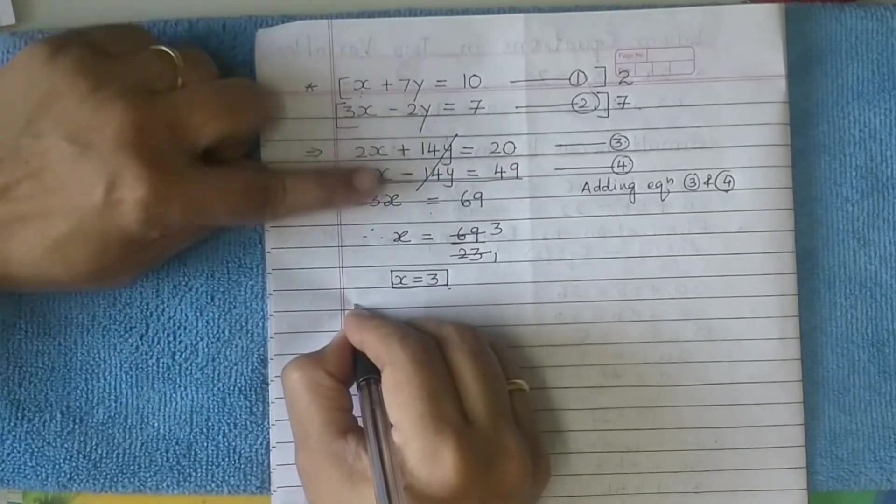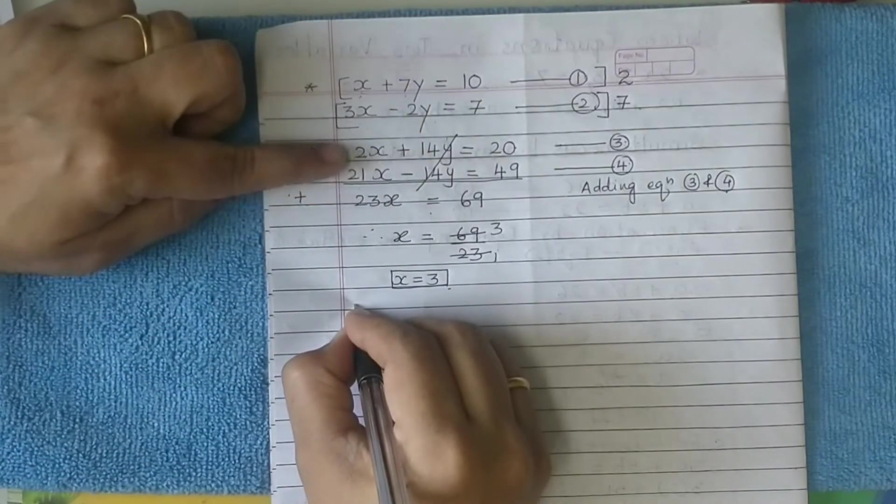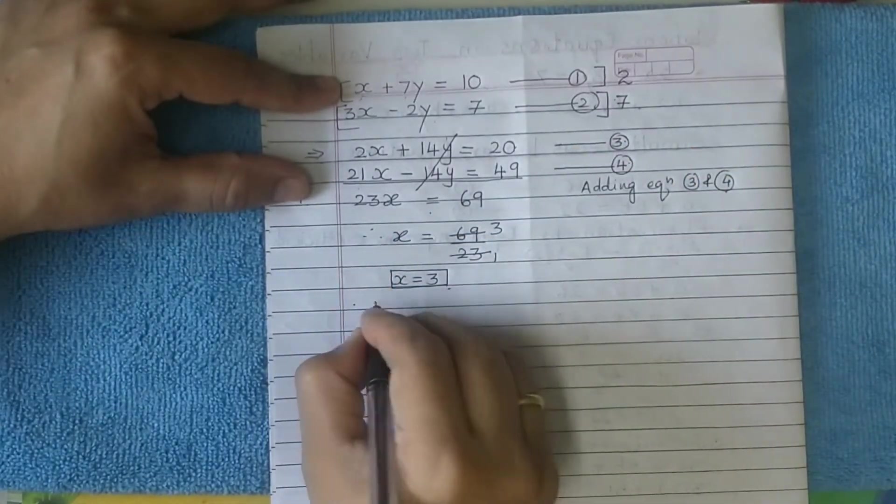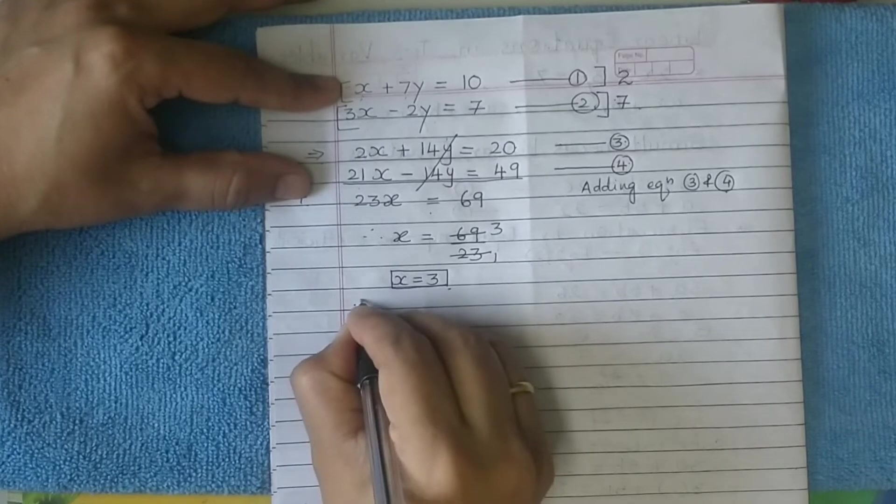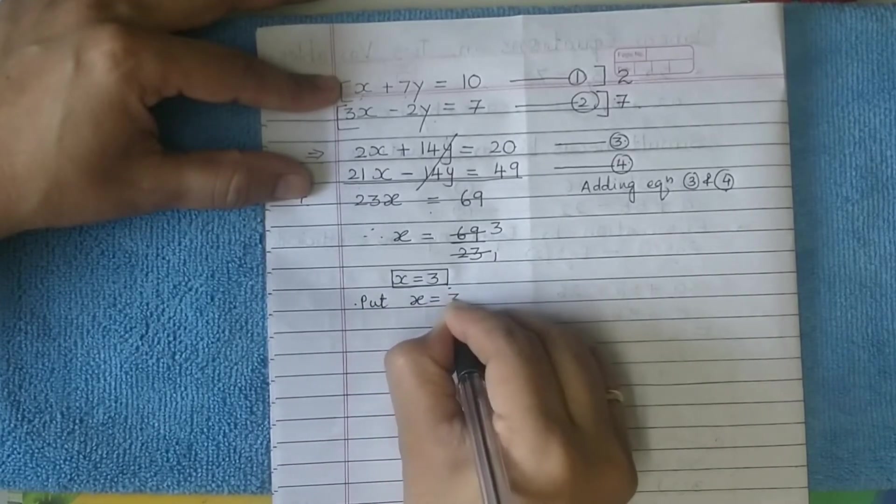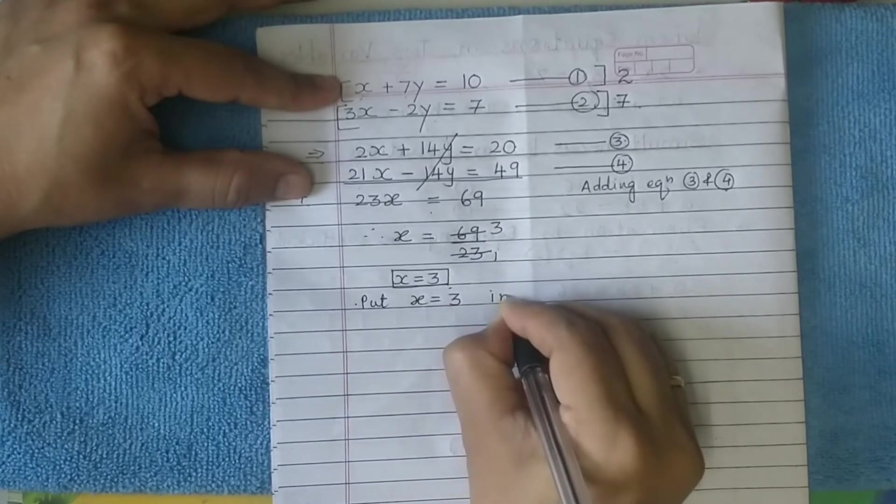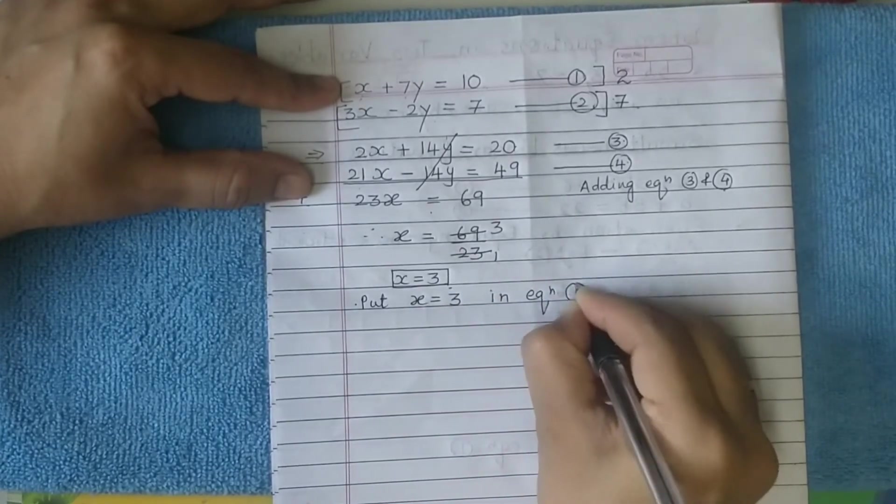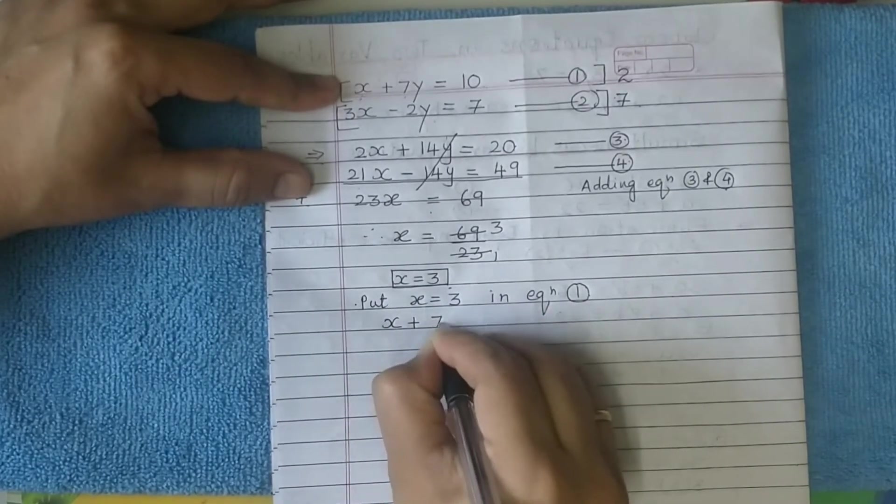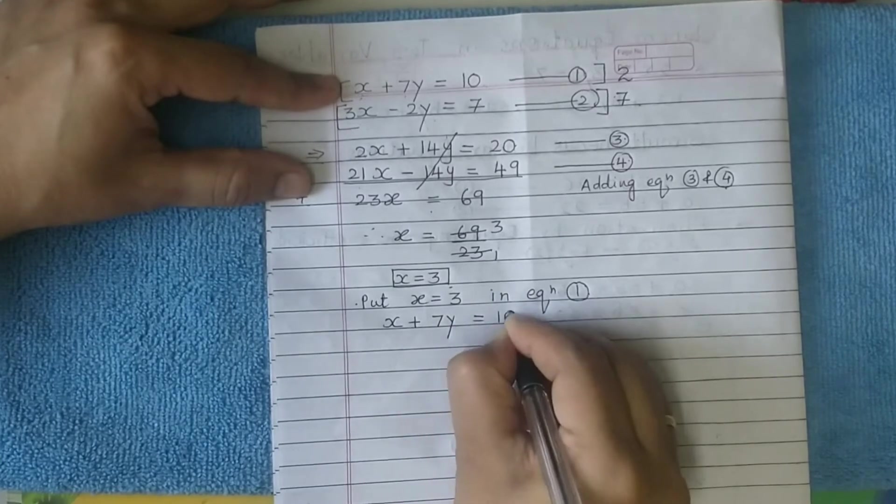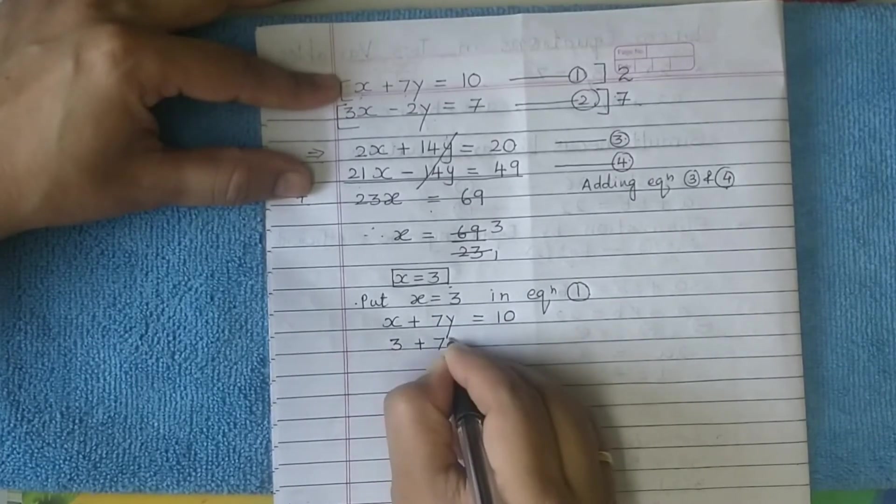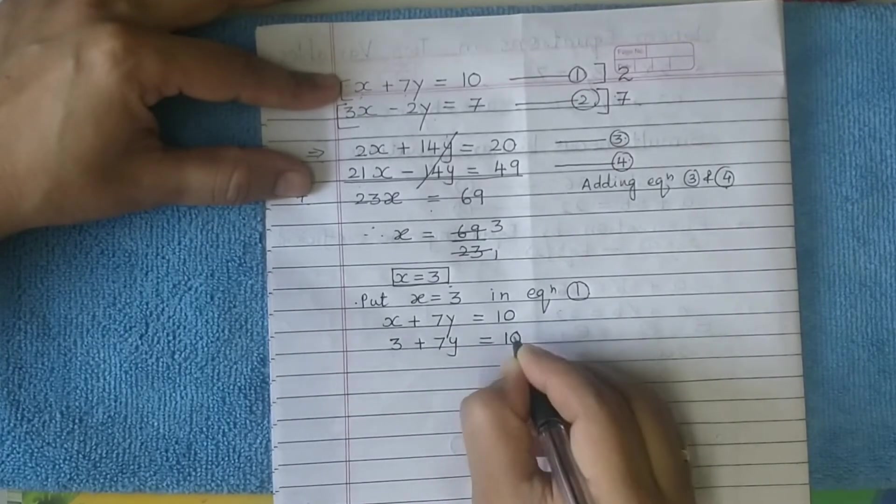Now select any one equation. You have got 4 equations now - do not go for equation 3 and 4. In order to simplify, we shall go either for 1 or 2. By default we go for equation 1. So put the value of x, that is x equals 3, in equation 1. What is equation 1? x plus 7y equals 10. That is 3 plus 7y equals 10.